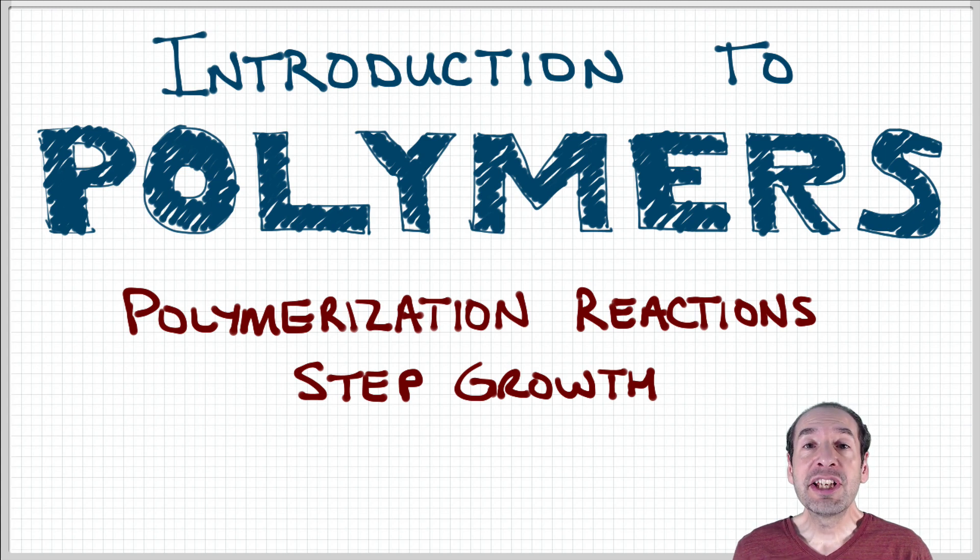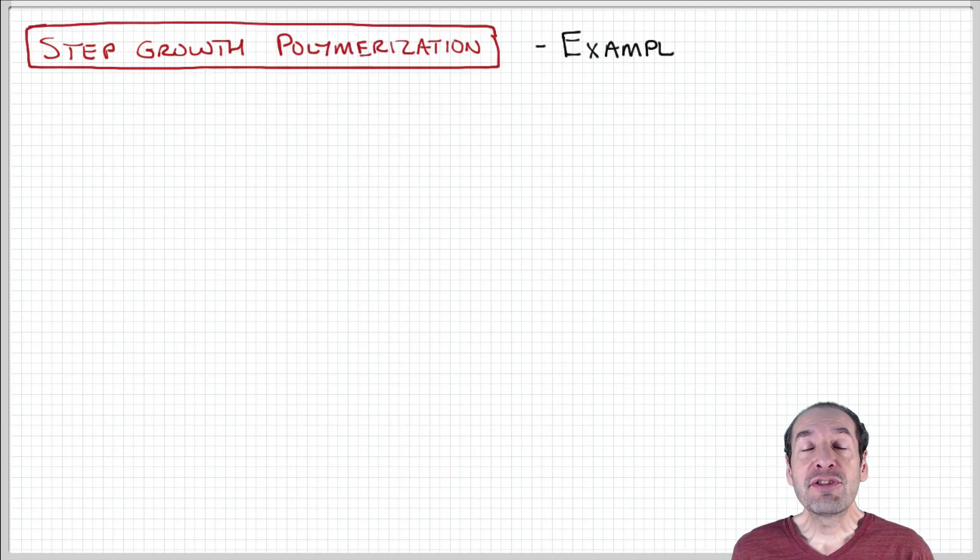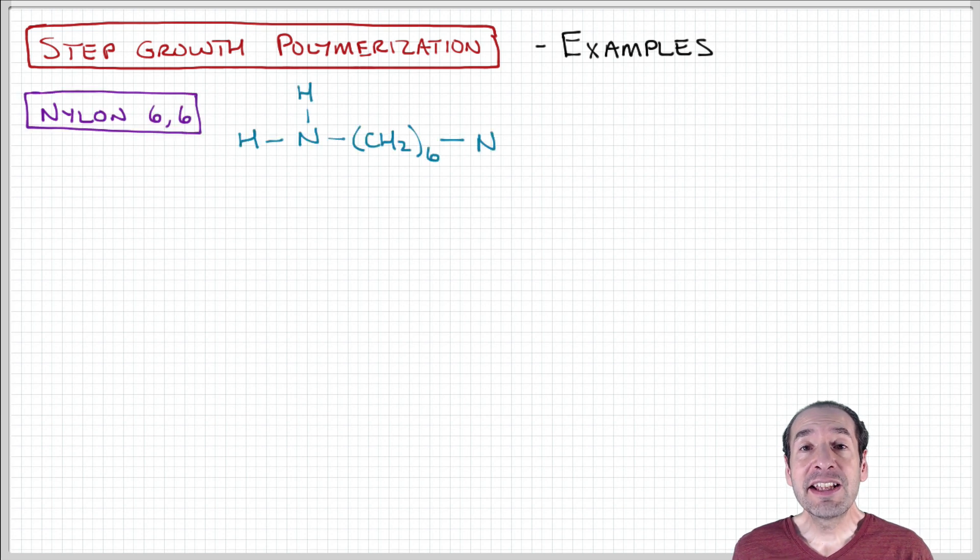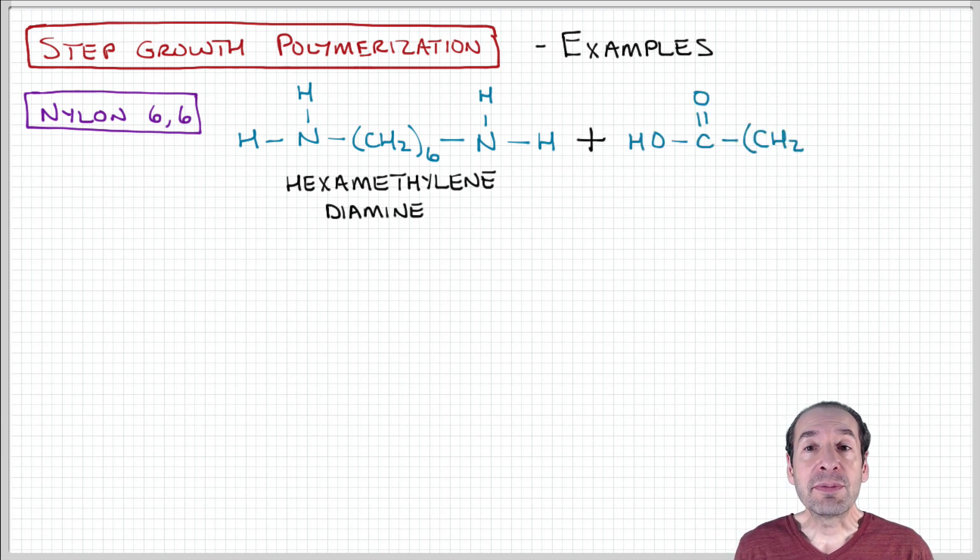We're going to talk in more detail about step growth polymerization, but before we do that, I find it helpful to identify some of the materials that are produced using each of these polymerization mechanisms. There's some familiar kinds of materials, and this helps us get a mental picture of the reaction mechanism that will be useful later.